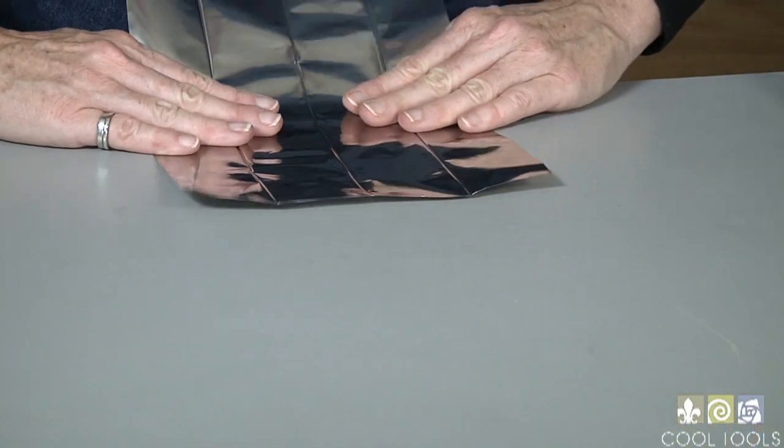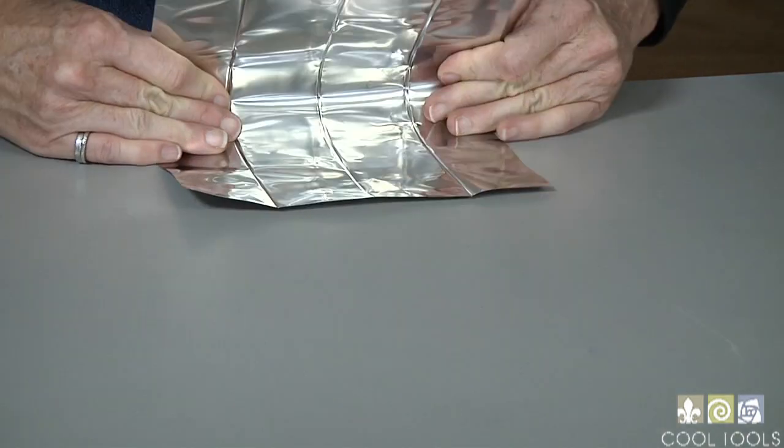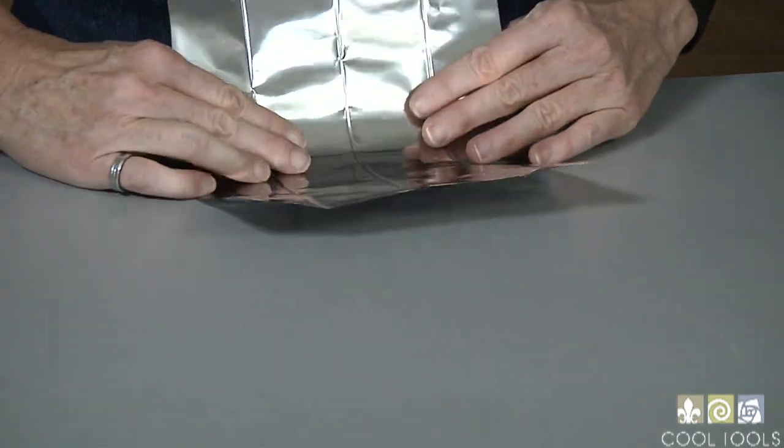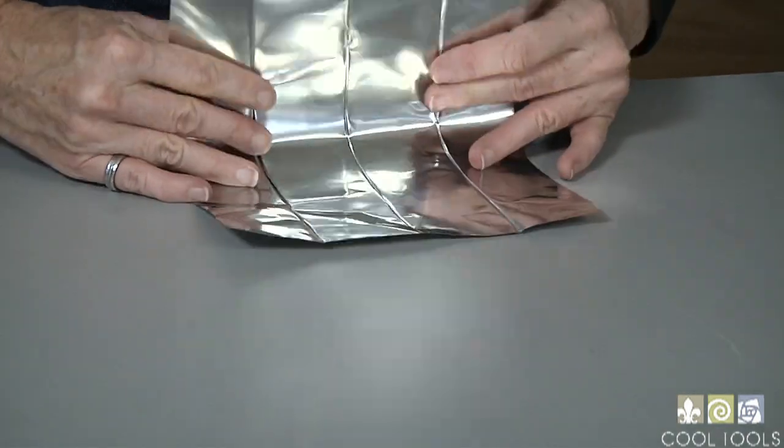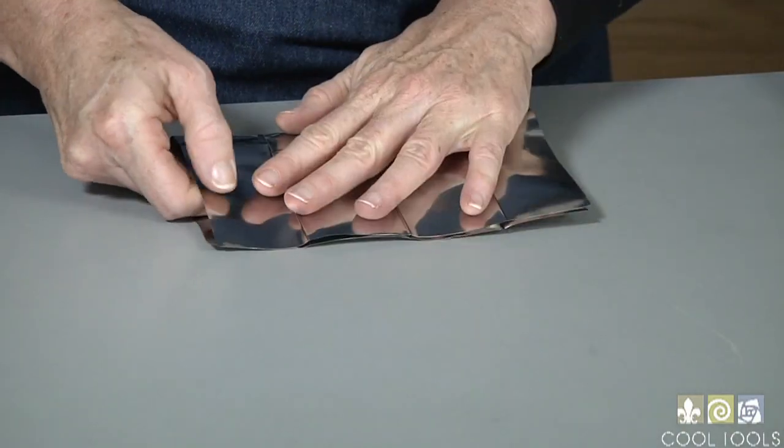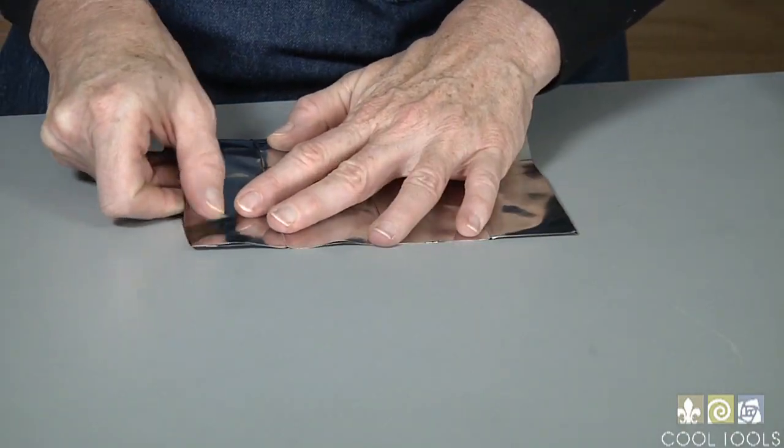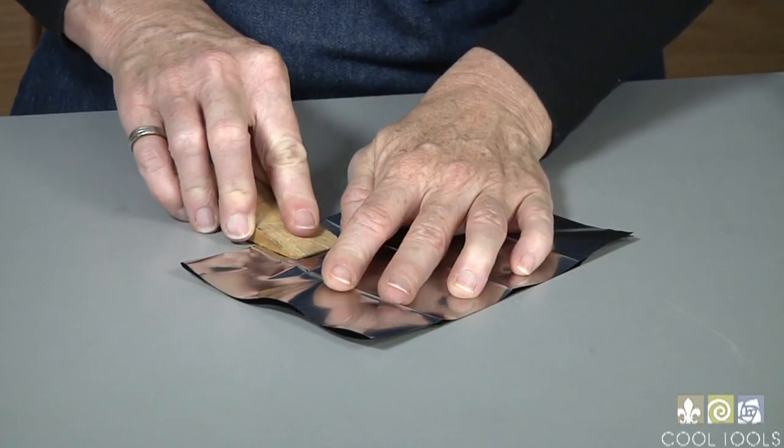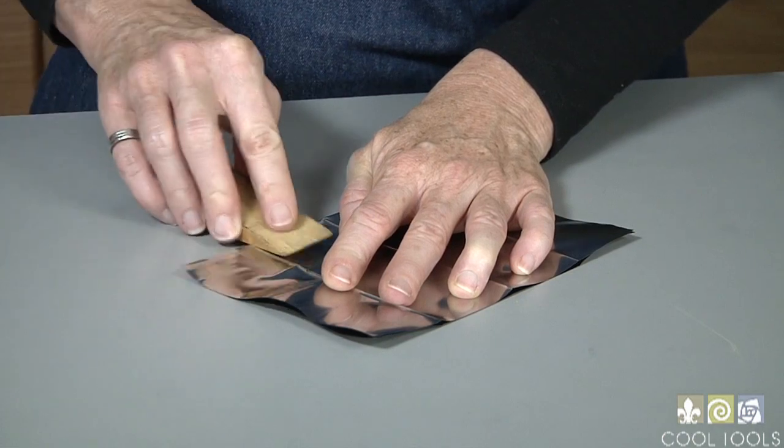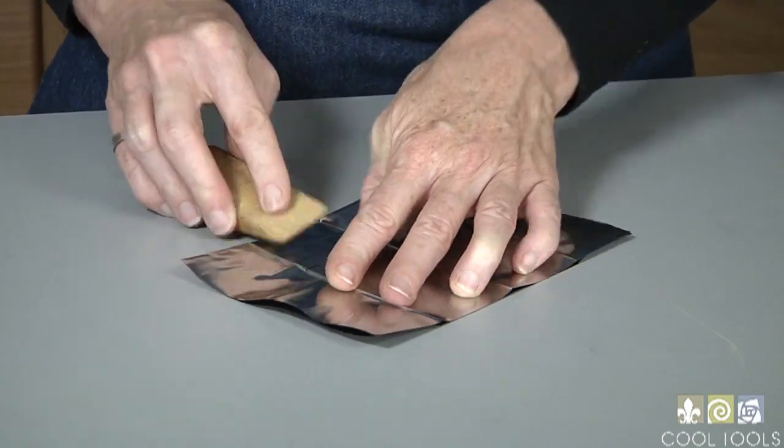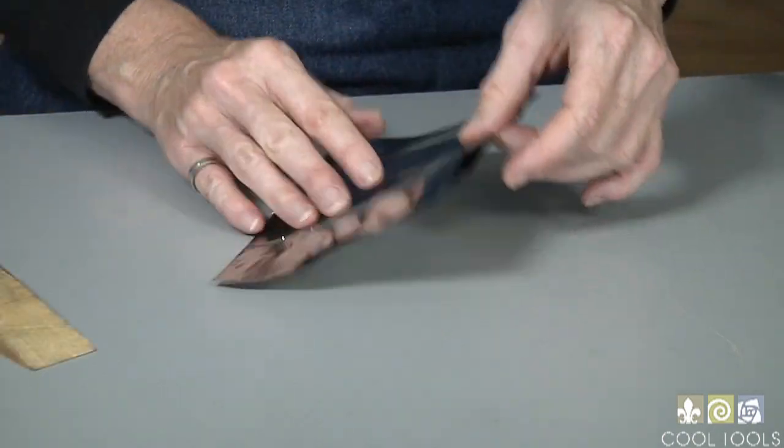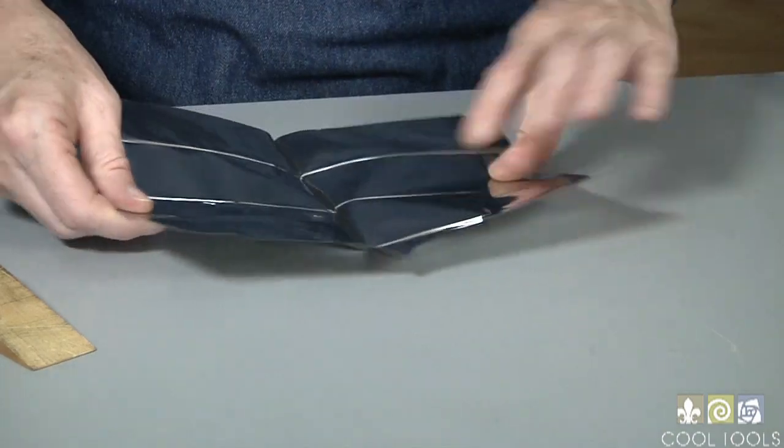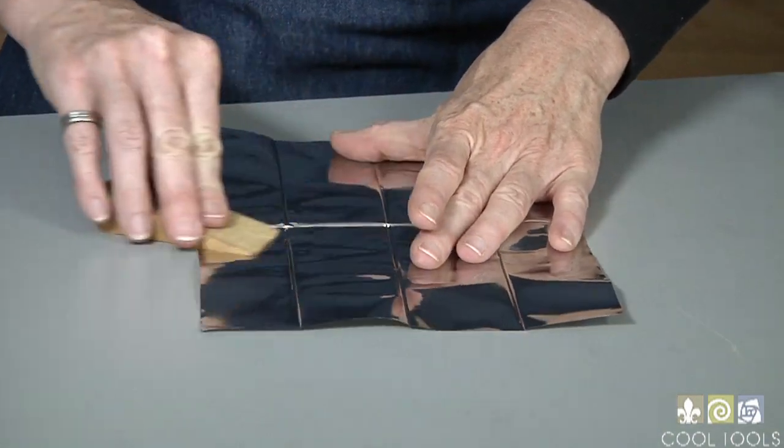Now I'm going to fold it in half the other way. Make sure I've got a nice smooth curve here so that it doesn't kink. Line these up really nice. I'll get a better looking box if I can line these up. And then I'll use my burnisher to burnish in between these seams. And then I'll open this up and burnish this fold flat.